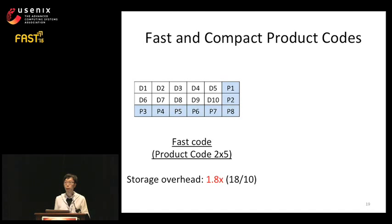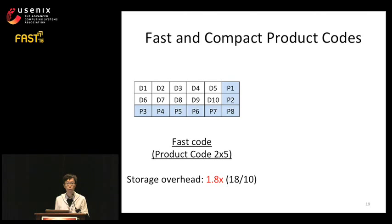Here I show a fast product code, which we call a 2x5 product code. This code groups every 10 blocks into a 2x5 matrix and computes horizontal and vertical parities. The horizontal parity P1 is the XOR of data blocks D1 to D5 on the same row. The vertical parity P3 is the XOR of data blocks D1 to D6 on the same column. Altogether, we add 8 parity blocks to every 10 data blocks, giving a storage overhead of 1.8x. After encoding, all data and parity blocks are distributed to different nodes to provide fault tolerance.